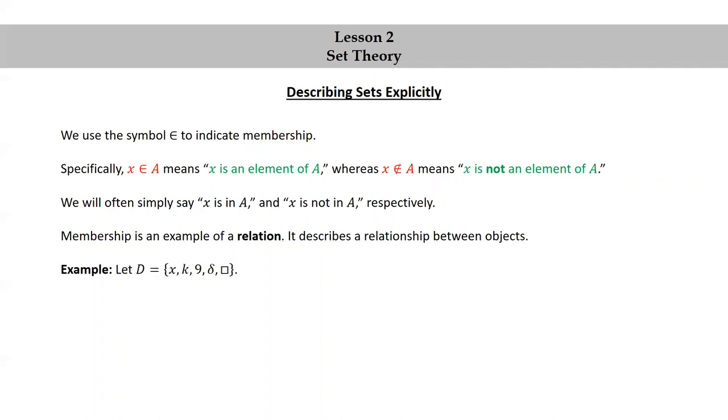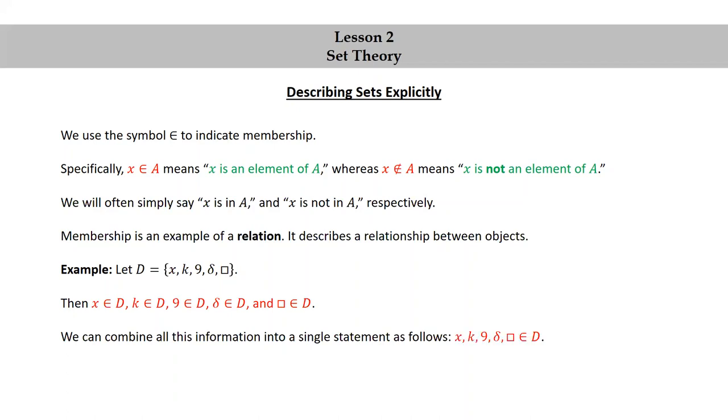Let's look at an example. Let D be the set consisting of X, K, 9, delta, and square. Then X is in D, K is in D, 9 is in D, delta is in D, and square is in D. We can combine all this information into a single statement as follows: X, K, 9, delta, square is in D.